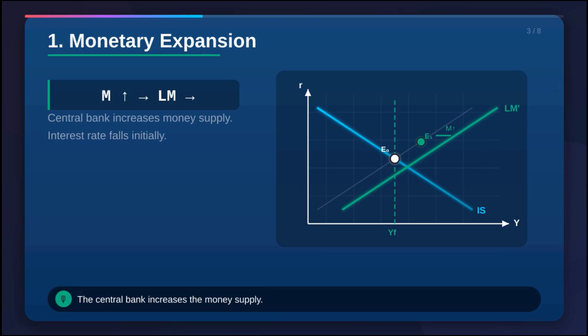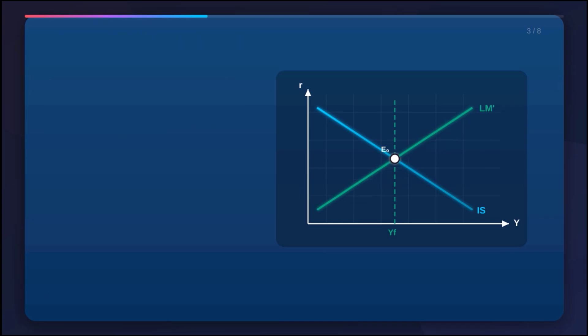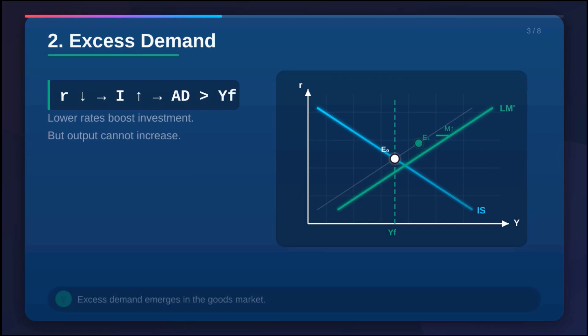This is where we run smack into that wall we mentioned earlier. The full employment wall. In a regular economy with some slack, all that new demand would mean more production, more jobs. But here, there's no more to give. You can't just produce more goods out of thin air.